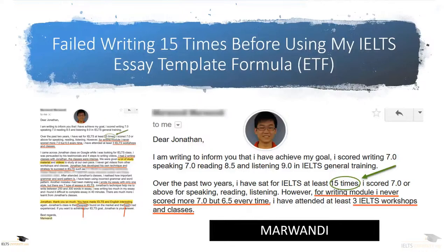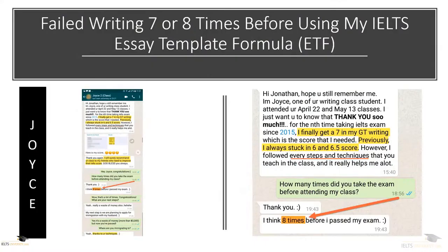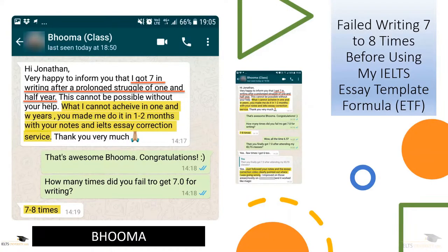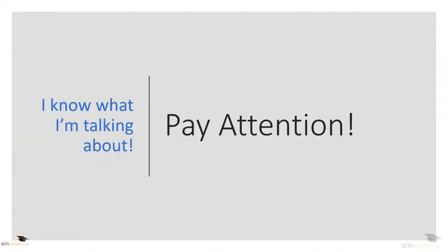Let me share some testimonials from students who have benefited from the essay template formula. Mawandi failed 15 times, always got 6.5 for his writing — then he came to my class and got 7.0 and passed. Joyce failed her writing 7 to 8 times, always got 6.0 or 6.5, then came to my IELTS classes and passed with 7.0. Bhuma had the same story — failed 7 to 8 times, and finally came to my IELTS classes and got her 7.0 and passed. Please pay attention today because I'm going to teach you exactly how you can improve your writing dramatically using this same method.